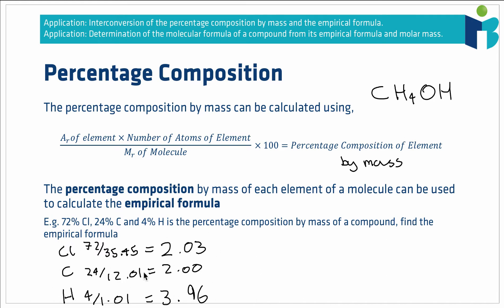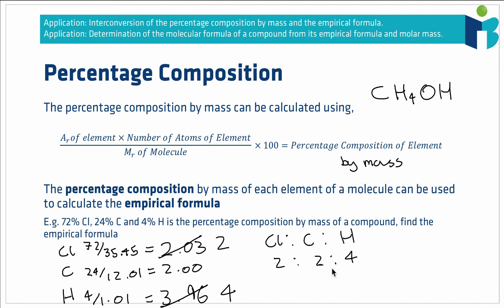Because of how we've rounded the percentages, the numbers don't always come out as whole numbers. Here, 2.03 is effectively 2, and 3.96 is effectively 4, while carbon comes out as exactly 2. That tells us the ratio of chlorine to carbon to hydrogen is 2:2:4. Since the empirical formula must be the simplest whole number ratio, this reduces to 1:1:2, giving us the empirical formula CClH₂.